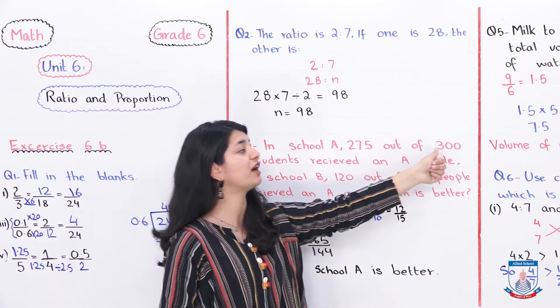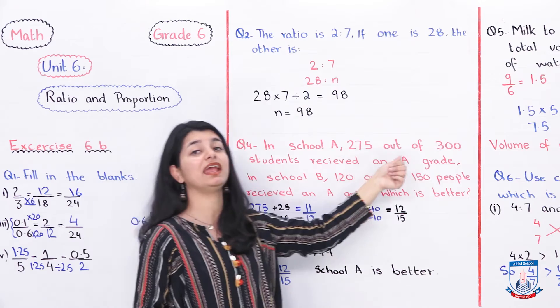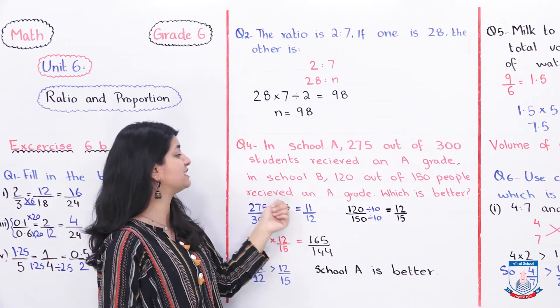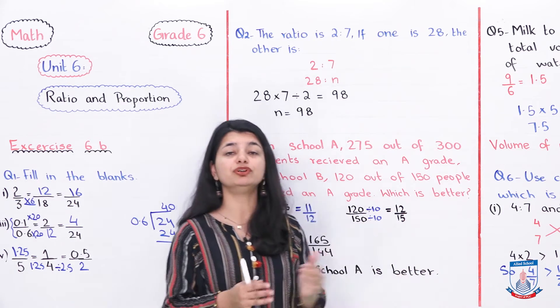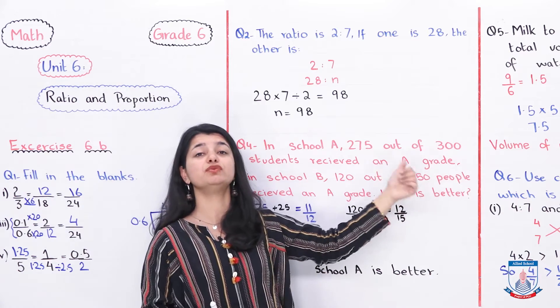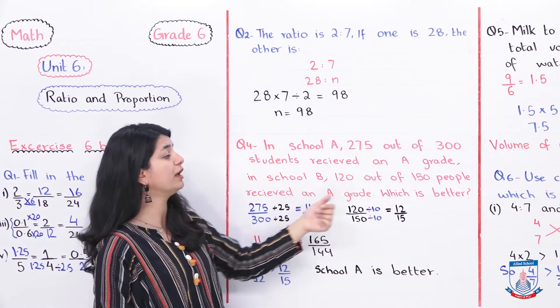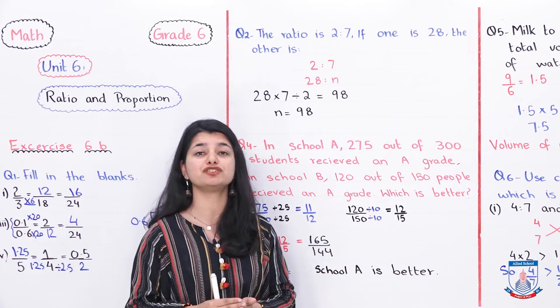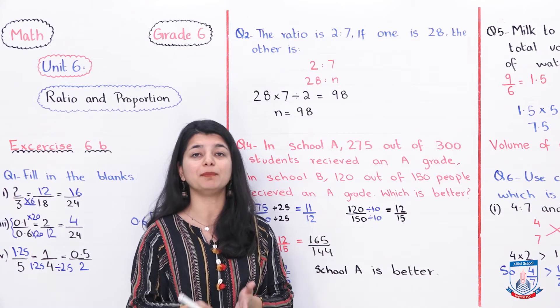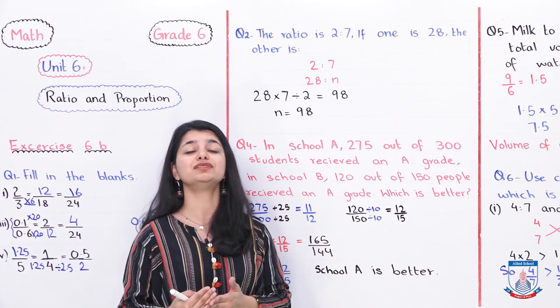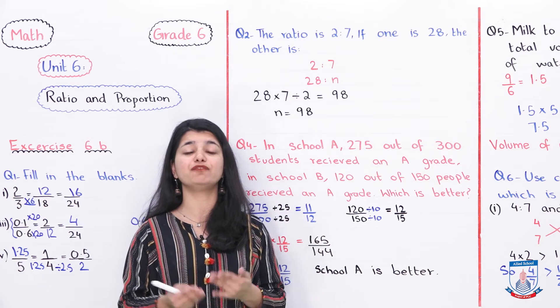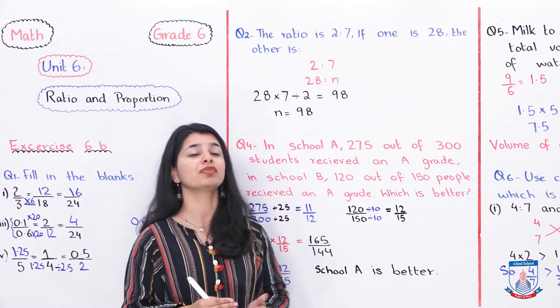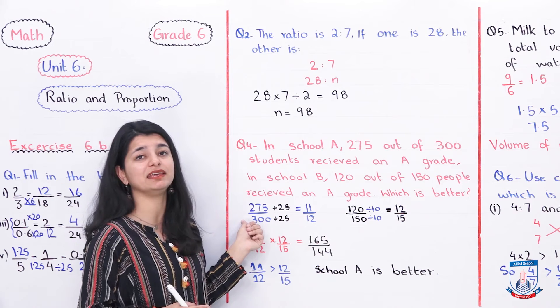Let's look at our fourth question. In school A, 275 out of 300 students received an A grade. In school B, 120 out of 150 people received an A grade. Which is better? There are two different schools. In one school out of 300 children, 275 got A grades. Obviously, whichever school has more children getting A grades is the better school. You have to compare both of these and then tell us which one is better.